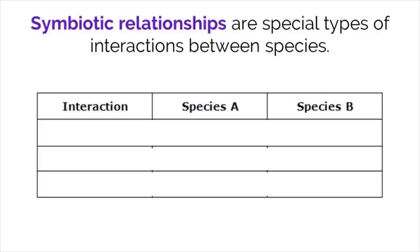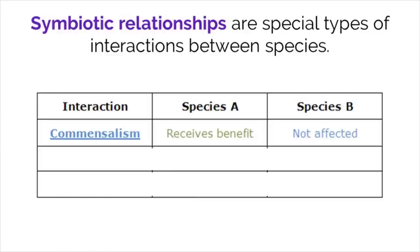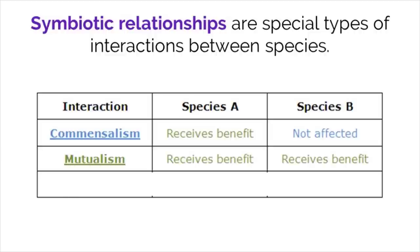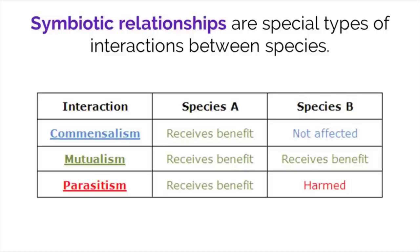Aside from predation and herbivory, there are a few other important interactions between species that ecologists study. These are commensalism, where one organism benefits from the interaction and the other is not affected; mutualism, where both organisms benefit from the interaction; and parasitism, where one organism benefits and the other is harmed.